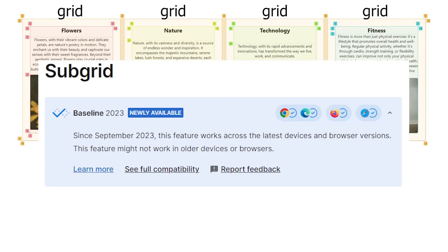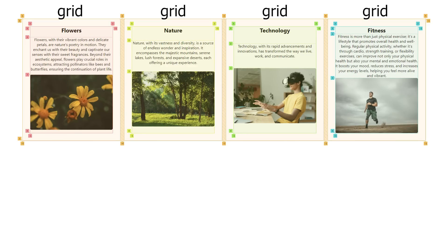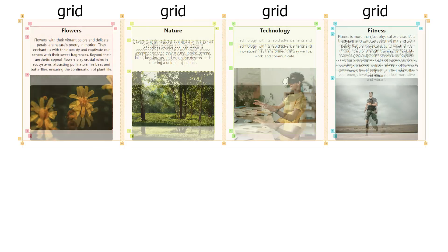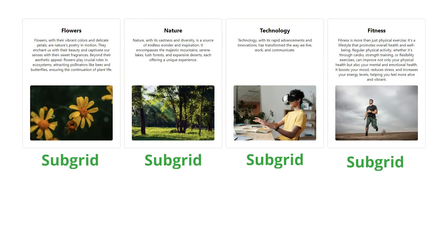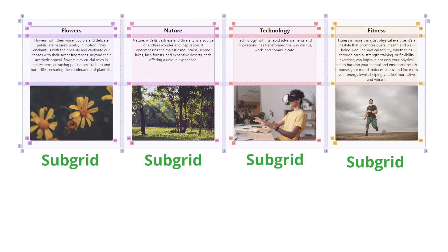However, in September of 2023, SubGrid — a new CSS feature — gained official support across all major browsers, allowing grid items with their own grid to inherit the rows and columns from the parent grid. This is very powerful, because now, looking at our design, we see nothing is aligned because each one of our items has its own set of independent rows and columns. But after using SubGrid on our items, they all now share the same rows and columns, because they're all inheriting them from the parent grid — and everything is perfectly aligned.